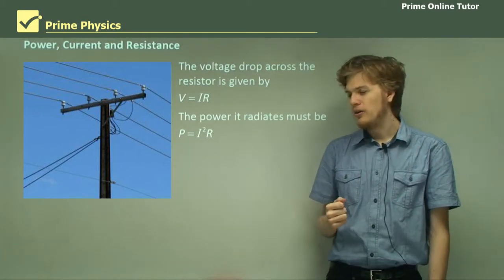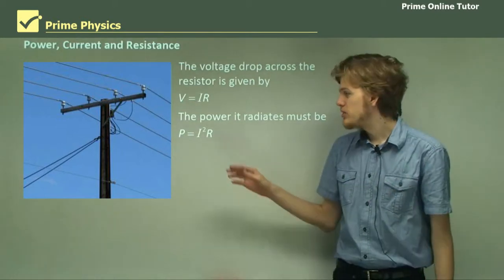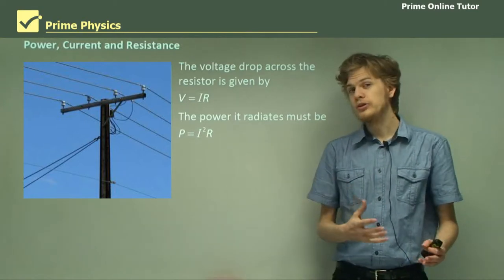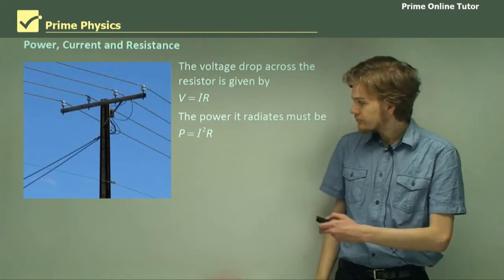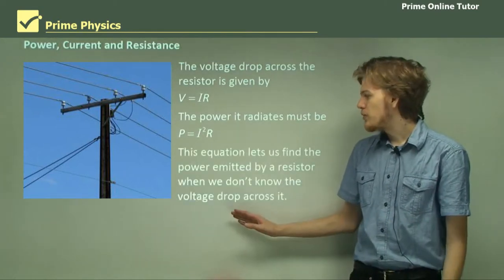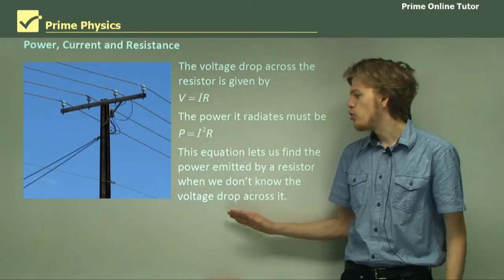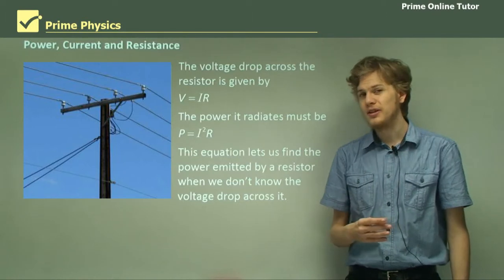So now, we depend on the current and the resistance through our resistor, rather than the voltage and the current. And this means that we can find the power emitted by the resistor even when we don't know what the voltage drop across that resistor is.